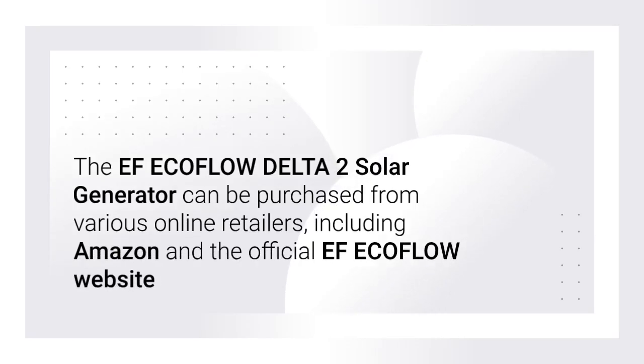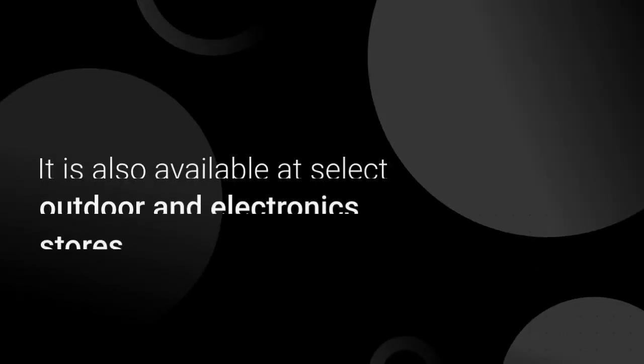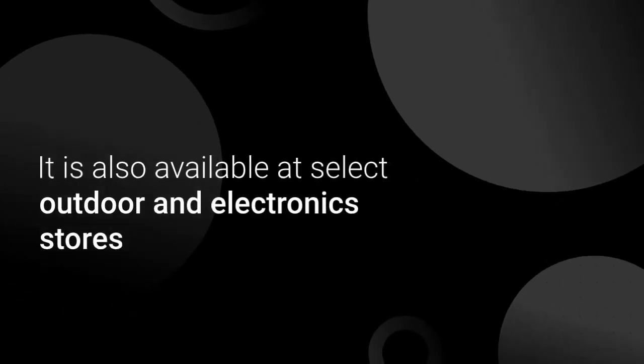The EF EcoFlow Delta II Solar Generator can be purchased from various online retailers, including Amazon and the official EF EcoFlow website. It is also available at select outdoor and electronics stores.